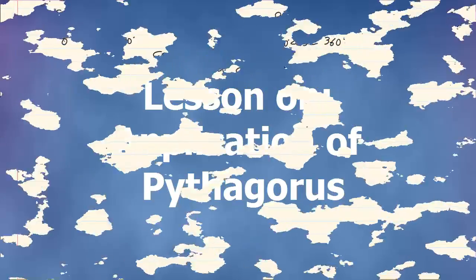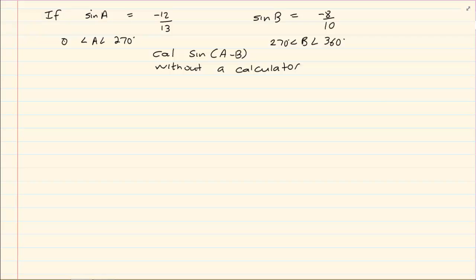Hi and welcome to my maths class. Now when they are giving us an equation that has sin A is equal to minus 12 over 13 and sin B is equal to minus 8 over 10.